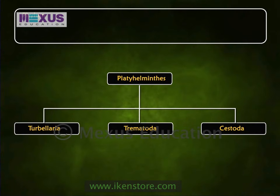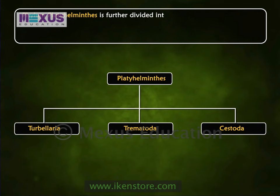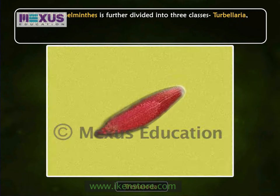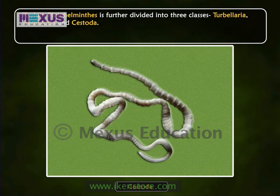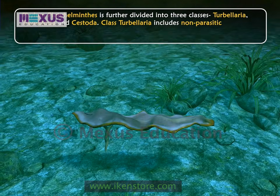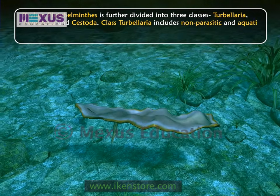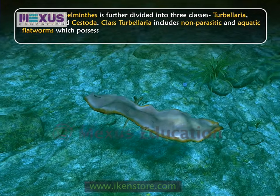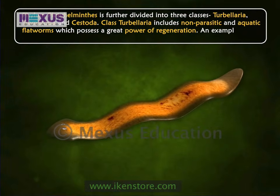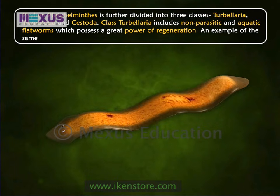Phylum Platyhelminthes is further divided into three classes: Turbularia, Trematoda, and Cestoda. Class Turbularia includes non-parasitic and aquatic flatworms which possess a great power of regeneration. An example is planaria.